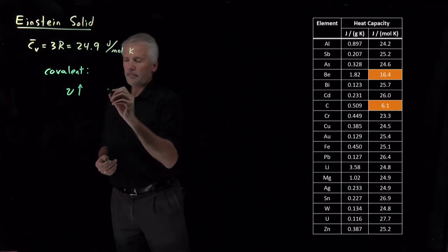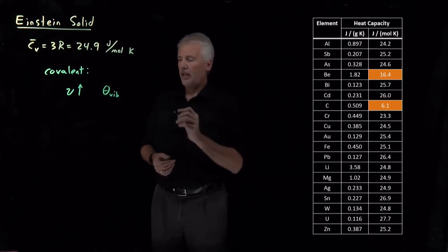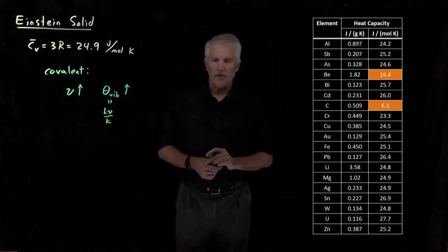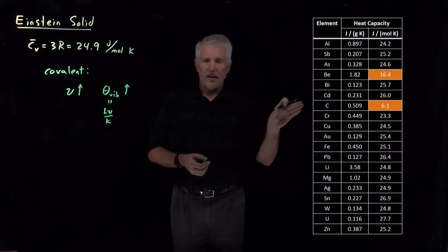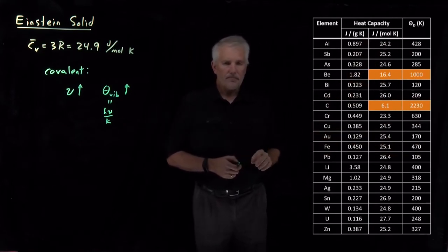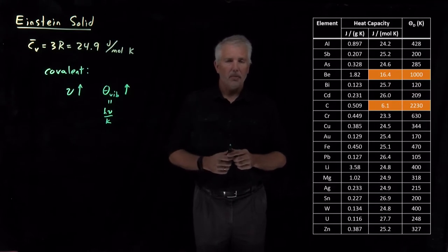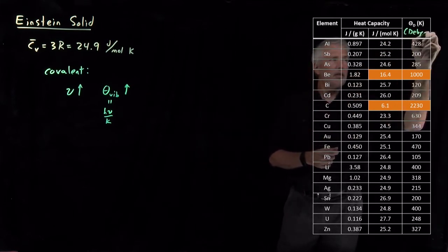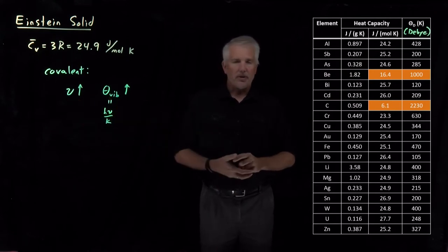So the vibrational frequency is larger for carbon and beryllium than for the metals. Another way of talking about vibrational frequencies is via the vibrational temperature, which equals hν over k. When the vibrational frequency is larger, the vibrational temperature is also larger. In fact, if we look at the fourth column of this table — a measurement called the Debye temperature — that's essentially a measurement of the vibrational frequency or vibrational temperature of these materials.